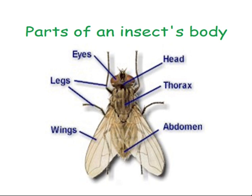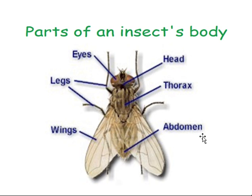Let us now look at parts of an insect's body. The insect's body is divided into three main parts: the insect's head, the insect's thorax, and the insect's abdomen.